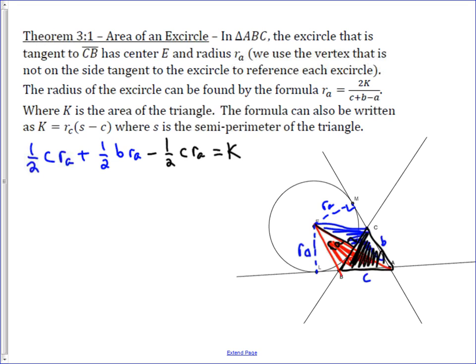Factoring out one-half rₐ, we get one-half rₐ times c plus b minus—and this should have been a, sorry—minus a. Right? This side length here was a, opposite side a. And that equals K.